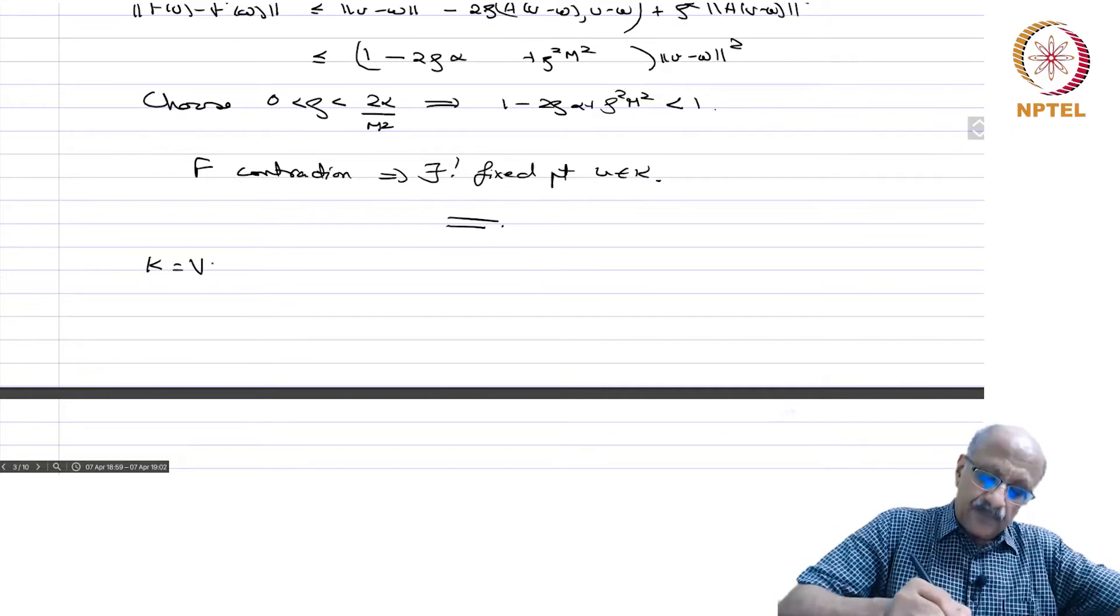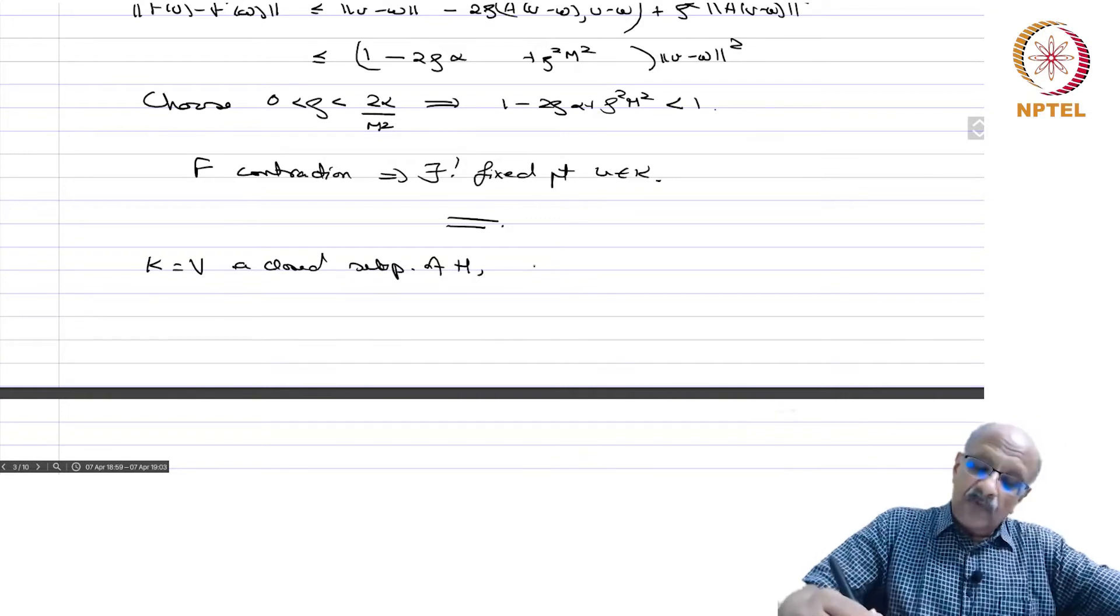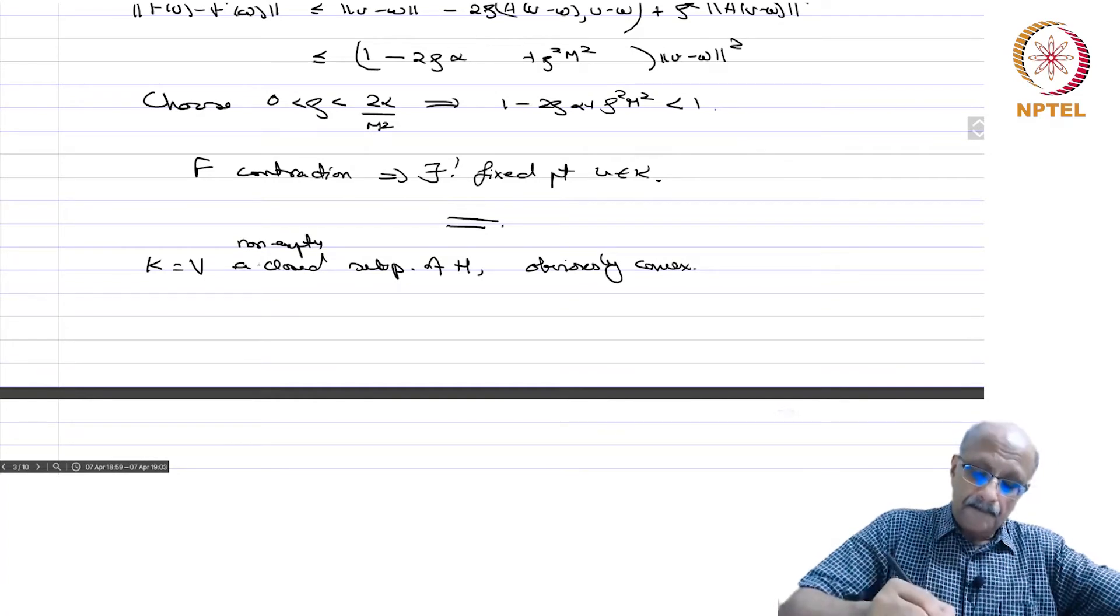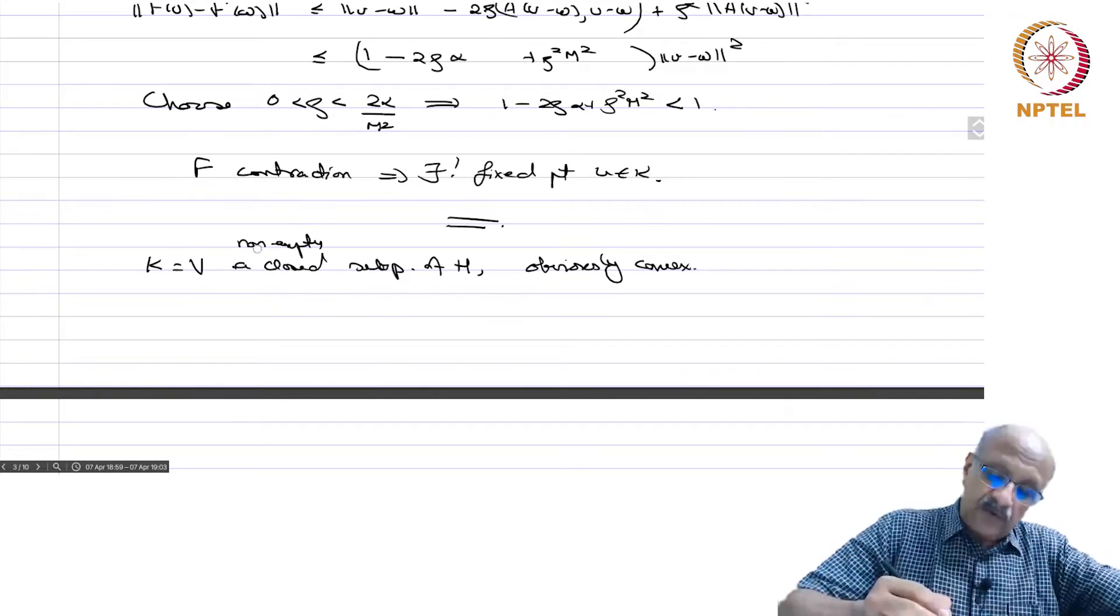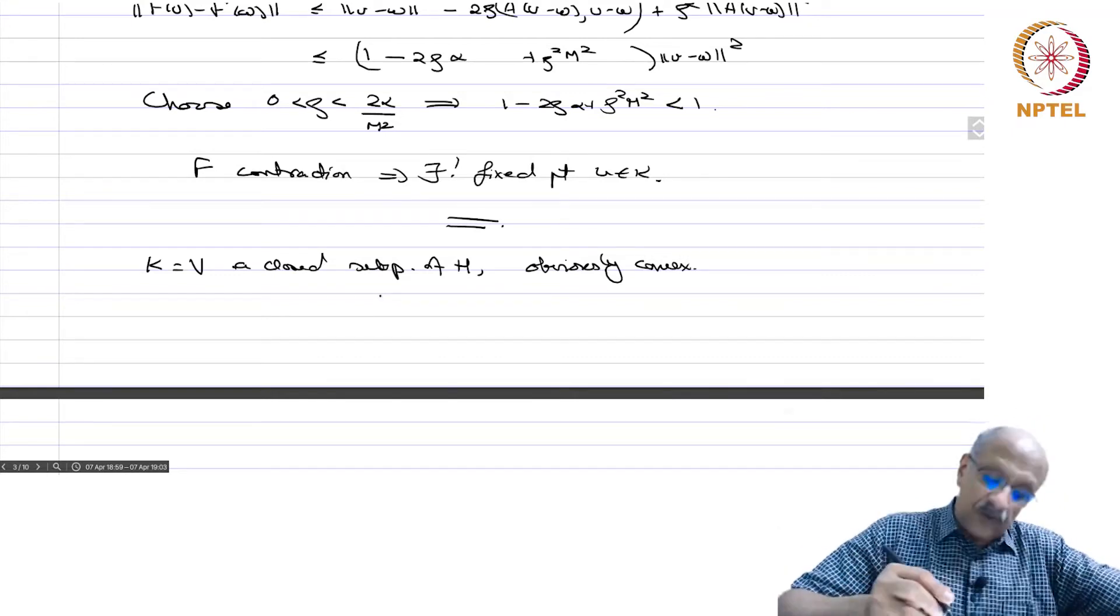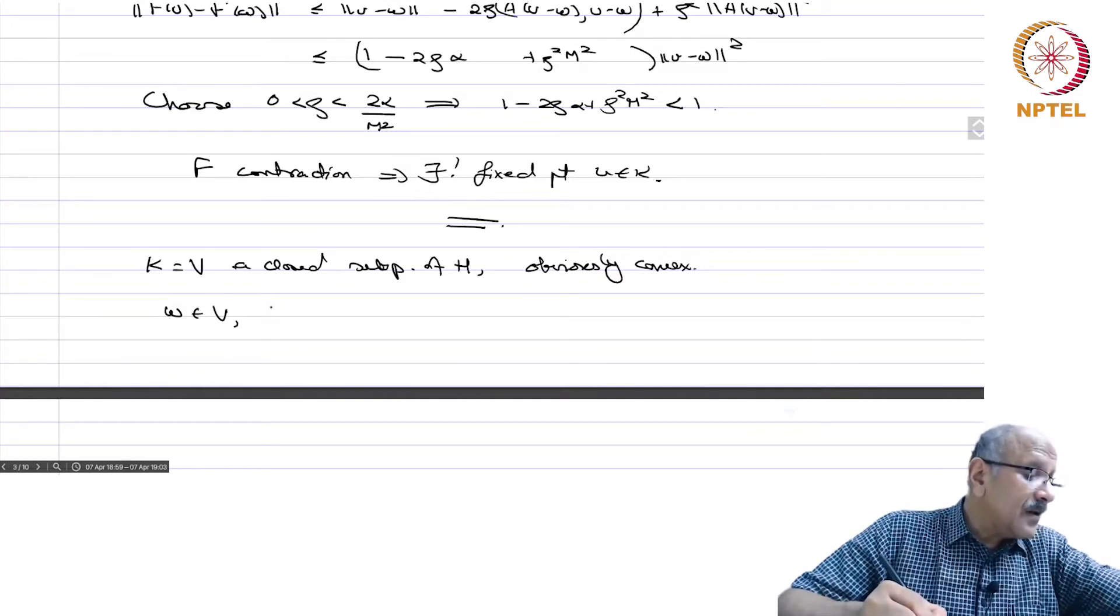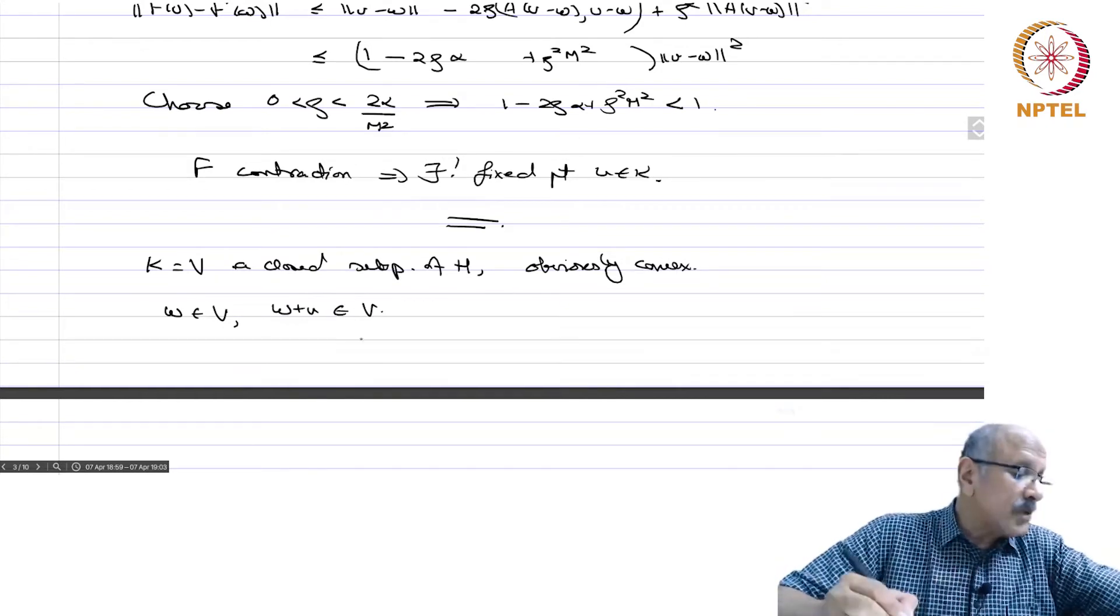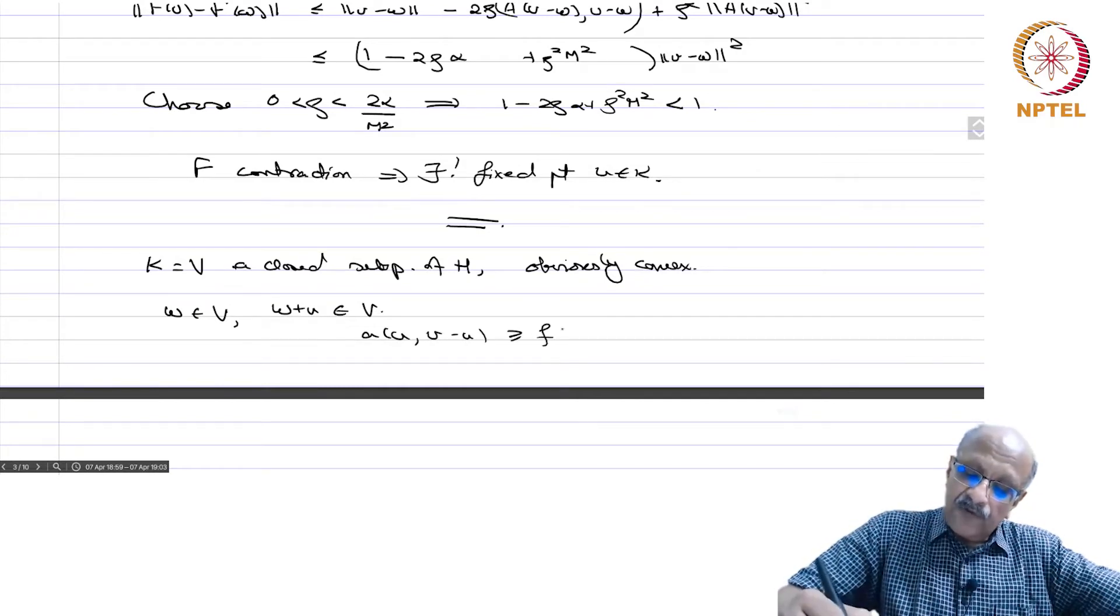If K equals V, a closed subspace of H, then obviously it is convex and non-empty. If w belongs to V, then w+u also belongs to V. You can substitute that. A(u, v-u) ≥ F(v-u), and that will give you A(u,w) ≥ F(w) also holds.